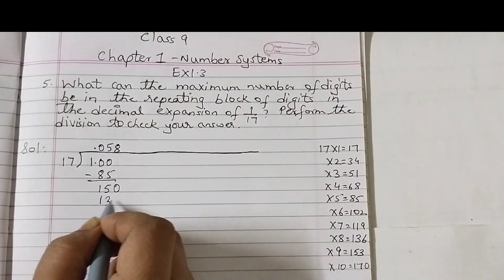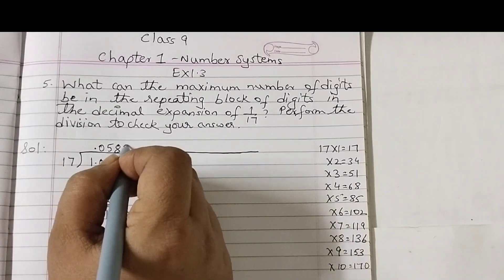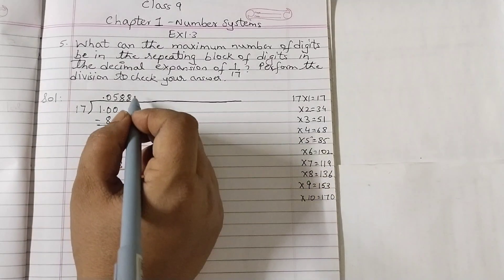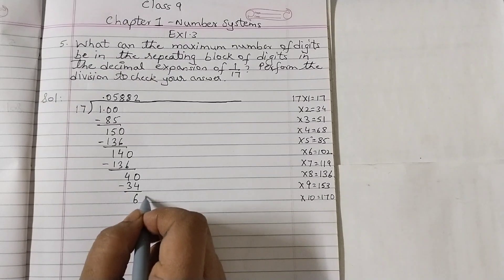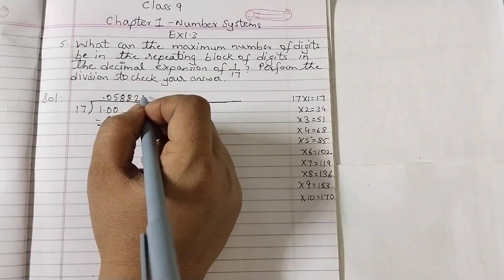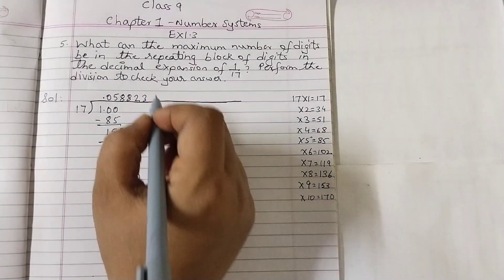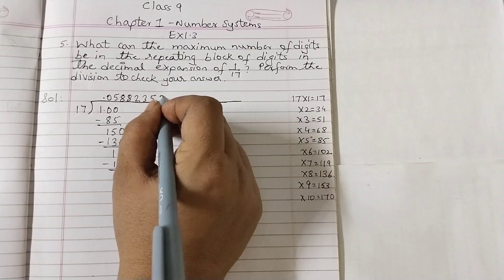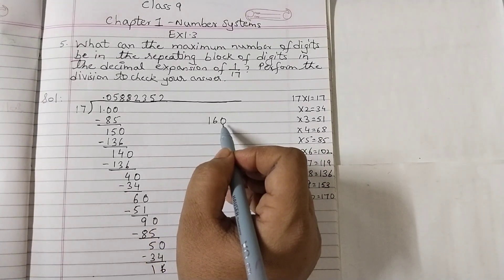150, so 17 into 8 is 136. We need a number which is smaller than this number. So 8, 136 minus 4, 0 again goes by 8, 136, 4, 0. So 17 into 2 is 34, subtract 6, 0. 17 into 3 is 51, subtract 9, 0. 17 into 5 is 85, subtract 5 here, put a 0. 17 into 2 is 34; we will take the 16 up here and place a 0 and continue the division.